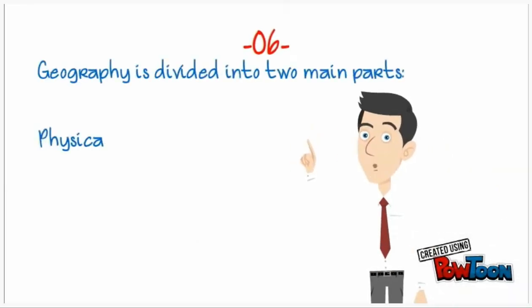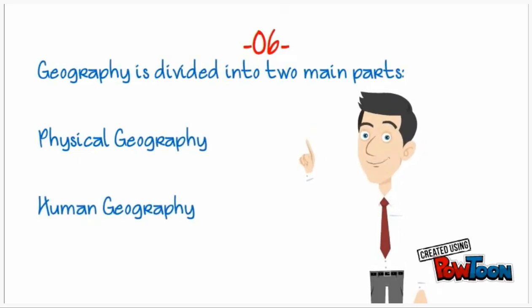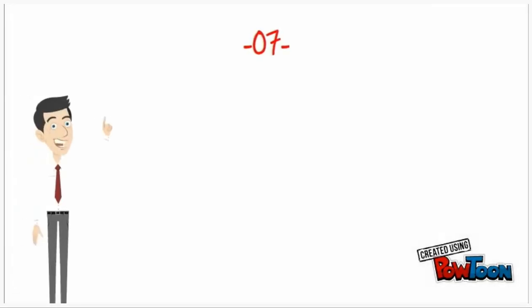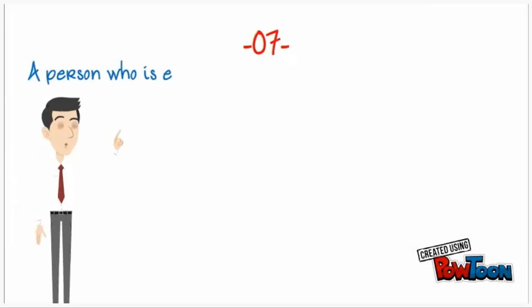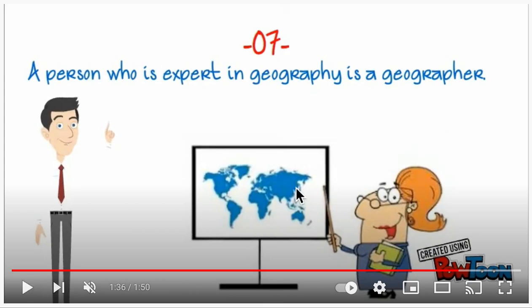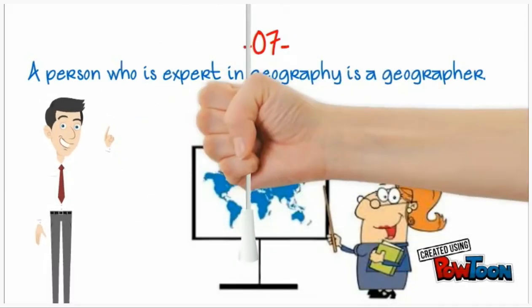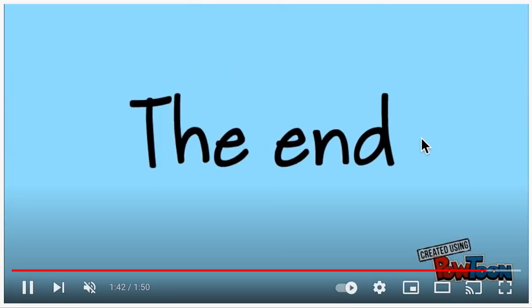Geography is divided into two main parts: physical geography and human geography. A person who is an expert in geography is a geographer. For this unit, we will all become geographers and study the earth — looking at maps and globes. I hope you enjoy it.